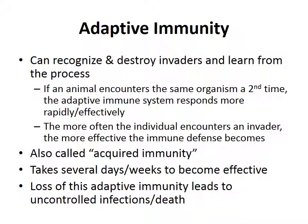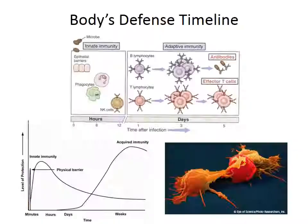Adaptive immunity is also called acquired immunity — those two terms are used interchangeably. It takes several days to weeks to become effective, which is why we have our primary and secondary lines of defense — skin, physical barriers, and innate immunity. Loss of adaptive immunity leads to uncontrolled infections and death. If your physical defense fails and innate immunity can't eliminate an organism, without adaptive immunity to back you up you could be in serious trouble. This is what happens with AIDS patients who can't produce the immune cells they need.